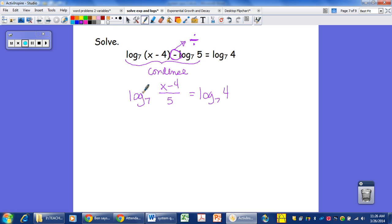So if this is true, that means that the log of this has to be equal to that. So if log base 7 of this equals log base 7 of 4, that means that x minus 4 over 5 must be equal to 4. These things have to be the same. So we go about solving this. We'll multiply both sides by the denominator, so x minus 4 will equal 20. And adding 4 to both sides, our x value is 24.